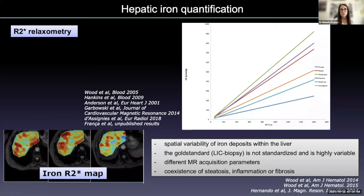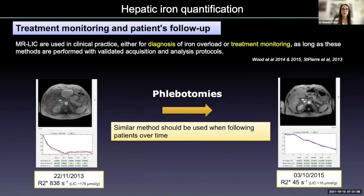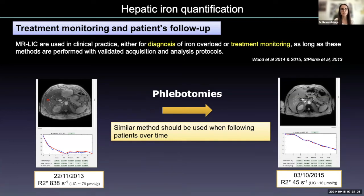This is important to keep in mind. If we are following up patients over time, we should use a similar method and look for the R2* value that is reproducible, but be careful when choosing the conversion formula to obtain the liver iron concentration.